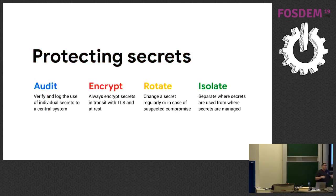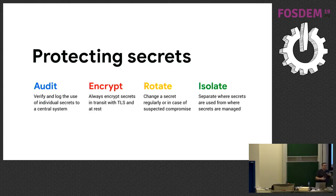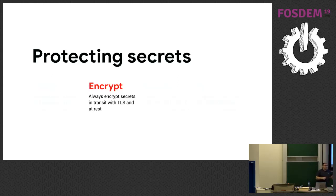There are really four ways in which we can protect secrets. We can audit them — retroactively log every use of a secret and trace who's using it and when. Encryption — in transit and at rest. Rotation — a secret has to have a lifetime, maybe a couple hours or a couple years. And isolation — principle of least privilege, making sure the place where secrets are accessed is not the same place they're stored. This talk is really focusing on the encryption bit.